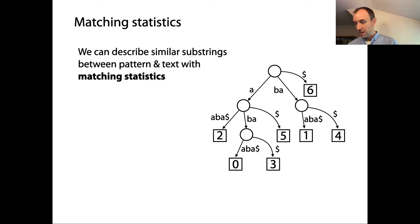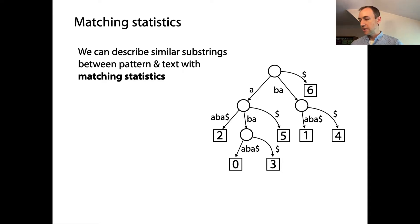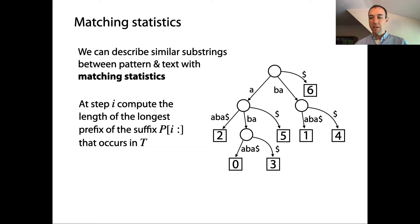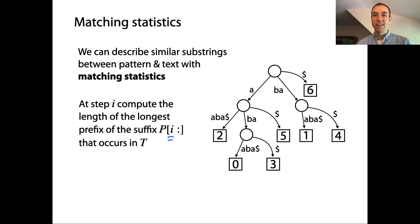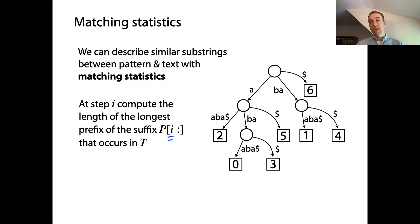Let's start with the motivation: we want something that helps us describe similar substrings between the pattern and the text so that we're getting maximal substring matches between P and T. The idea of matching statistics is: at each step we're going to compute the length of the longest prefix of the suffix starting at offset i that occurs in T. We're marching along P left to right and asking how far out can we go to the right adding characters onto our match before we can't extend it any farther.